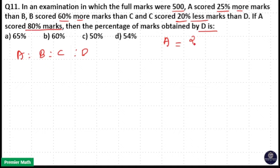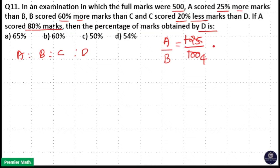A scored 25% more marks than B, that means plus 25. 25% means 25 by 100. That is the A by B ratio — if B scores 100, A will score 100 plus 25, which is 125 marks. 25 cancels with 100 to give 1 by 4, so if B scored 4 marks, A will score 4 plus 1, that is 5 marks. So 5 by 4 is the A by B ratio.